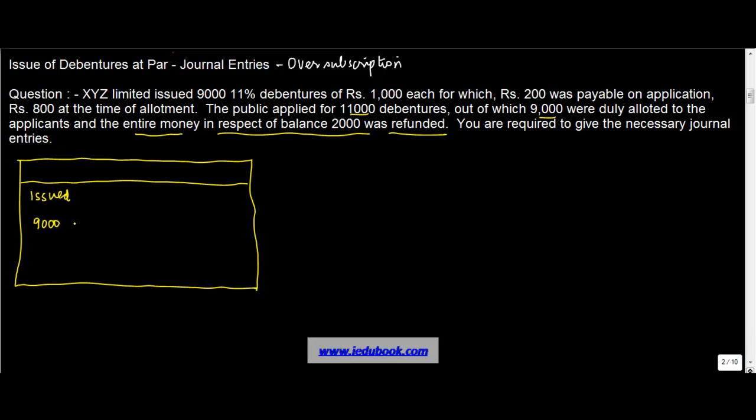The public applied for 11,000. Applied for was 11,000, right? Out of which 9,000 were duly allotted to the applicants. So how many were allotted? Allotted was 9,000.